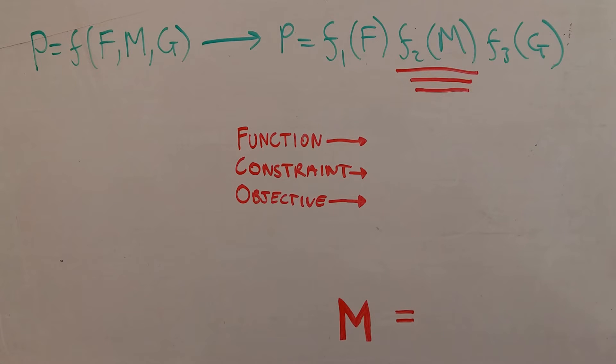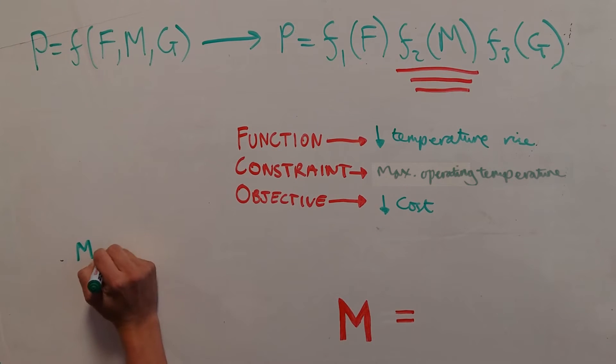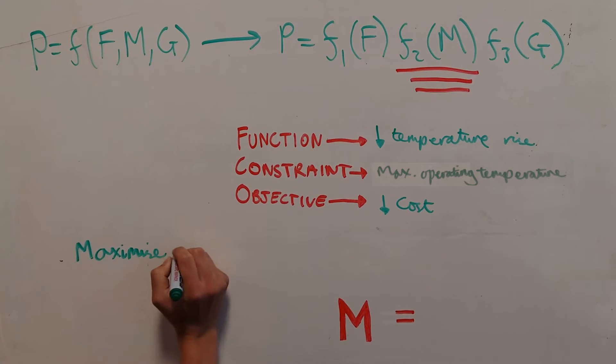We derive the material index by considering the function, constraint, and objective. From these, we can create an equation: 1 over the thermal diffusivity multiplied by the cost.